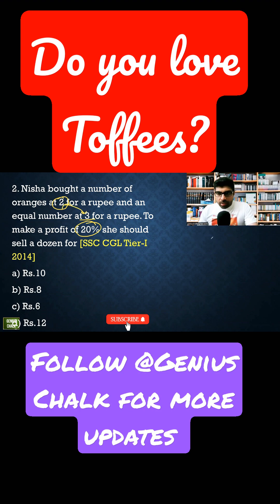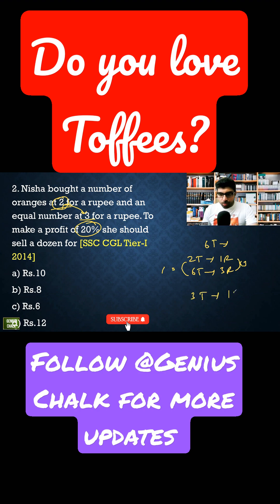Let's say six toffees in total. For the first rate, two toffees for one rupee means six toffees cost three rupees — multiplying both sides by three. Similarly, for three toffees per one rupee, six toffees cost two rupees. This is the cost price for each batch. So we have six toffees plus six toffees.